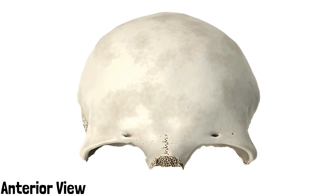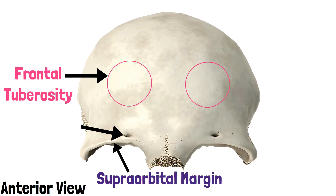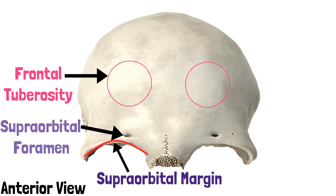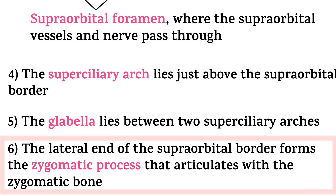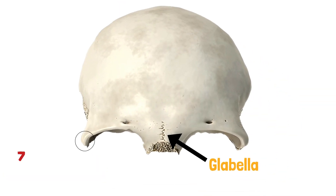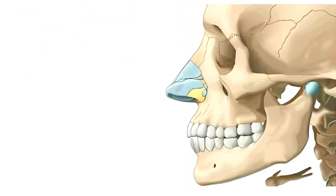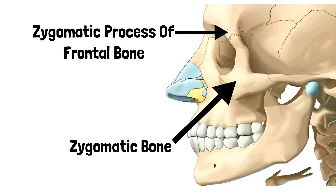This is the anterior view of the external surface of the squamous part. These two areas encircled are the two frontal tuberosities marked on the squamous part. This margin is the supraorbital margin, which contains the supraorbital foramen for the nerves and vessels. Just above this supraorbital margin lie the two supraciliary arcs, and between these arcs lies the globula. The lateral end of the supraorbital border forms the zygomatic process, which articulates with the zygomatic bone.